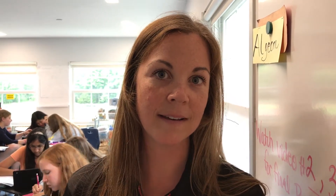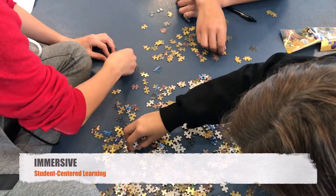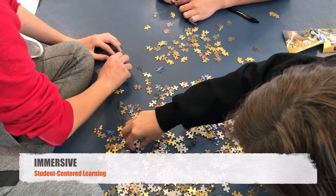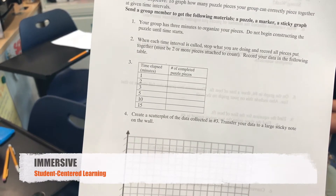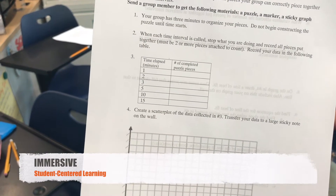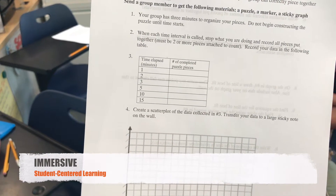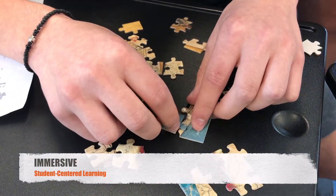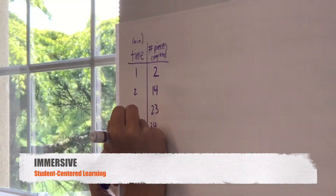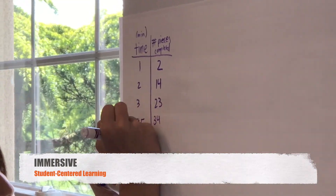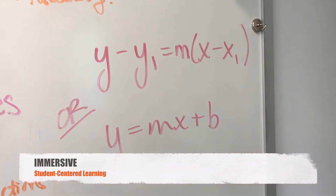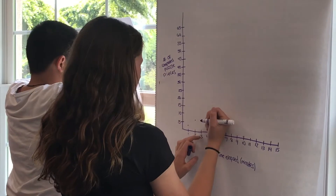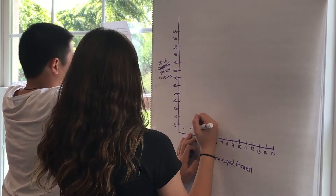They're building puzzles together, comparing two variables: time and how many puzzle pieces they were able to connect at the end of given time intervals. They'll then gather their data to create a scatterplot and construct a linear regression that best represents their data and make judgments based off of that.